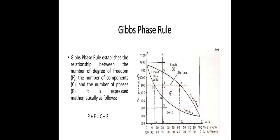Gibbs phase rule is also one of the important considerations while we are studying phase diagrams. Gibbs phase rule establishes the relationship between the number of degrees of freedom, the number of components, and the number of phases: P plus F equals C plus 2.